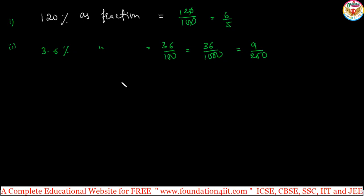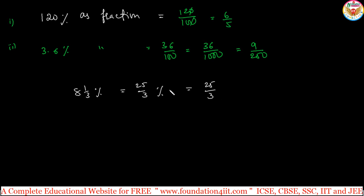Two simple rules to remember: fraction to percentage — multiply by 100; percentage to fraction — divide by 100. For example, 8 and 1 by 3 percent as a fraction: convert 8 and 1/3 to an improper fraction — that is 25 by 3 percent. Remove the percentage symbol by dividing by 100, giving 25 by 3 into 1 by 100, which equals 25 by 300, simplifying to 1 by 12. So 8 and 1 by 3 percent as a fraction is 1 by 12.